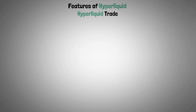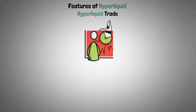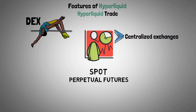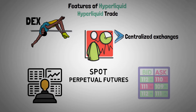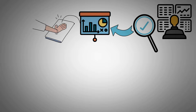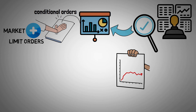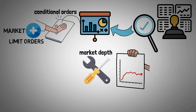Hyperliquid Trade provides an experience comparable to centralized platforms, raising the bar for DEXes. For spot and perpetual futures trading, traders have access to an easy-to-use order book. Users have unprecedented control over their trading strategies with the ability to place conditional orders in addition to standard market and limit orders.